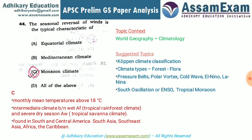Question 44 is from World Geography on climate. It asks: seasonal reversal of winds is the typical characteristic of which climate — equatorial, Mediterranean, or monsoon? The answer is monsoon climate, where wind direction changes with the season. In equatorial climate, the climate is the same 365 days a year with no seasonal change.